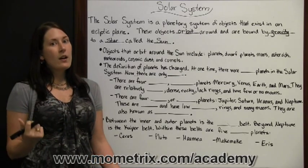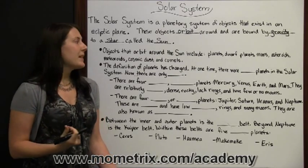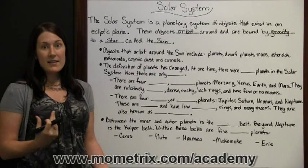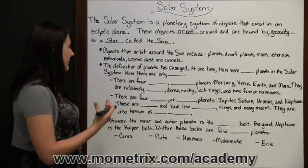They do not all orbit at the same rate, so they have different paths that they trace around the Sun.